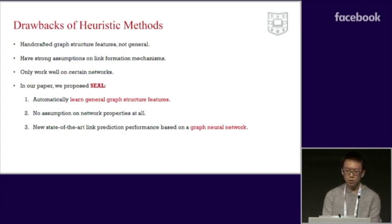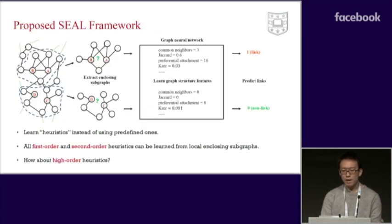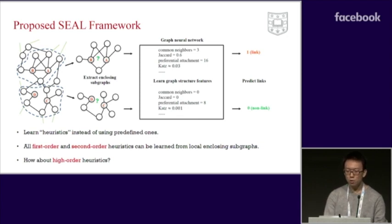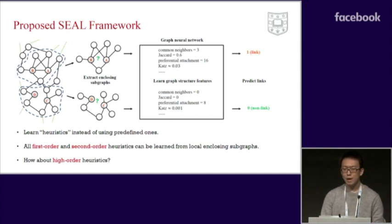SEAL achieves new state-of-the-art link prediction performance. Given a set of positive and negative training links — illustrated as links AB and CD in this figure — SEAL extracts a local neighborhood subgraph enclosing each training link. The local subgraph is then fed to a graph neural network to train a graph classification model. So why is classifying these subgraphs able to make link predictions?